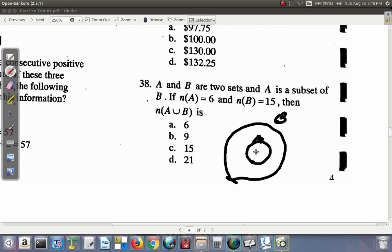You have A here and you have B here. A is a subset of B. If n(A) is 6, so 1, 2, 3, 4, 5, 6 things are in A. n(B) is 15. Now those 6 are already in B. So what we have is 6 already, then 7, 8, 9, 10, 11, 12, 13, 14, 15. The number in A union B is...